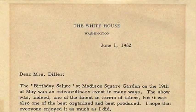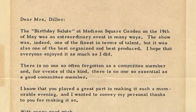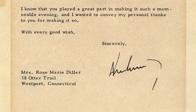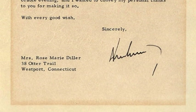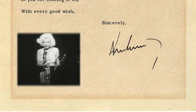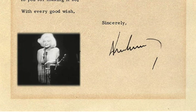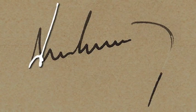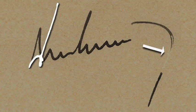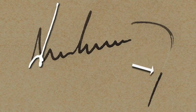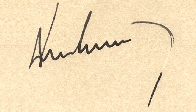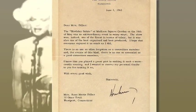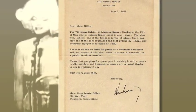This amazing letter relates to Marilyn Monroe's birthday salute to President Kennedy at Madison Square Garden. The variant J and the ink skipping in the characteristic crescent Y show the speed with which the busy president must have signed this. This letter is truly a treasure.